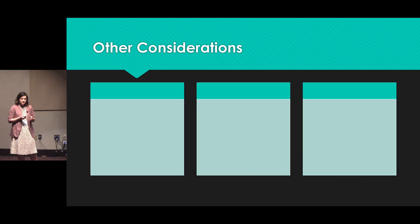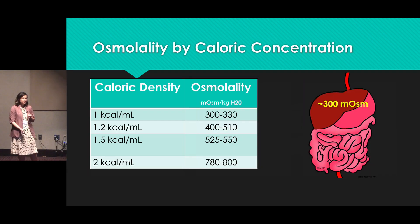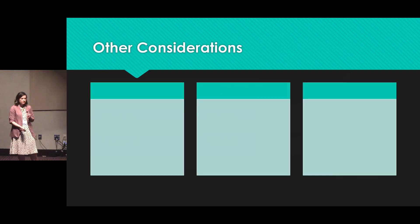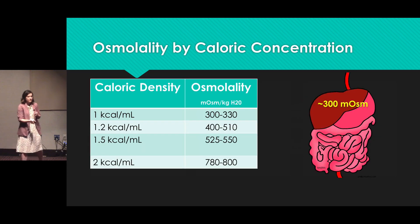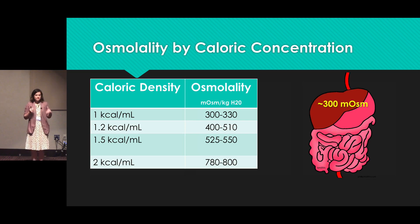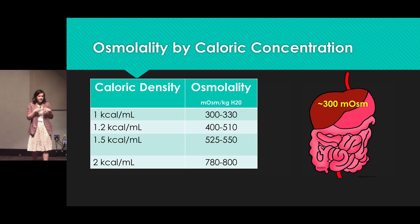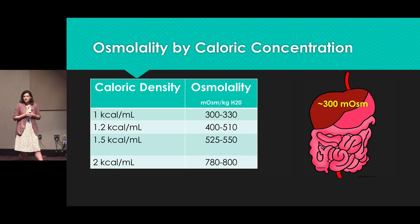Some other quick considerations when choosing a formula: osmolality. The more calories a formula has, the more concentrated it tends to be, and this can certainly cause diarrhea. The GI tract tolerates around a concentration of 300 mOsm/kg, and there are some examples on the slide of the osmolalities of various formulas.